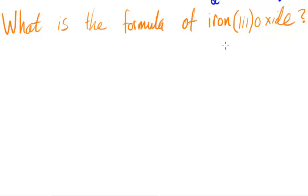In this video, following up from the concept of lowest common multiples which I covered in the last video — if you haven't seen that video and want to remind yourself of how to work out lowest common multiples, I recommend you watch that video before coming back to this one. In this video, we're going to be working through two problems which involve finding the formula of a compound given its systematic name.